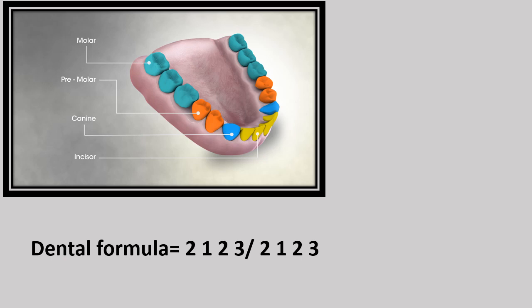There are four types of teeth in our mouth. Incisors are used to cut the food, canines are used to tear the food, and premolars and molars are used to chew or grind the food.